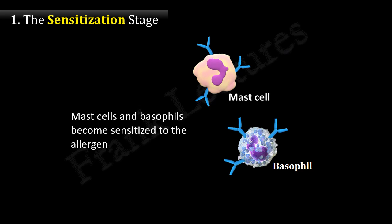In the absence of the allergen, these IgE-bound cells can remain in the body for a few months. Thus, in the sensitization stage of type 1 hypersensitivity reactions, mast cells and basophils become sensitized to the allergen, and they are now ready for the next stage.